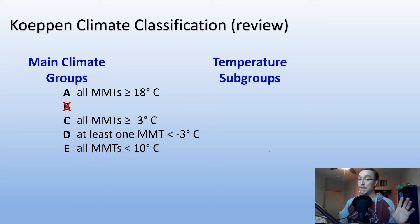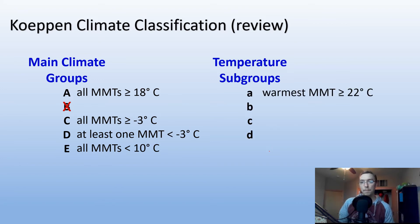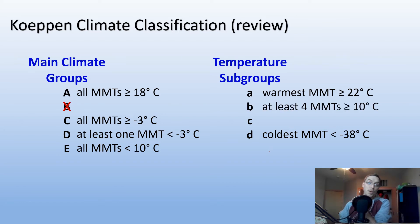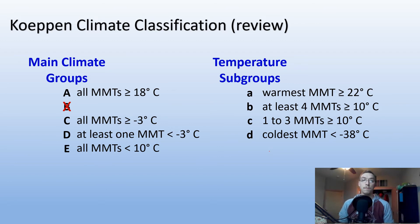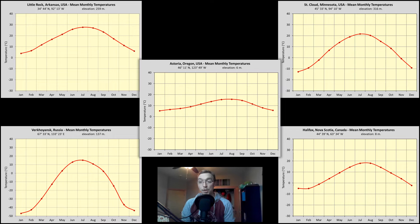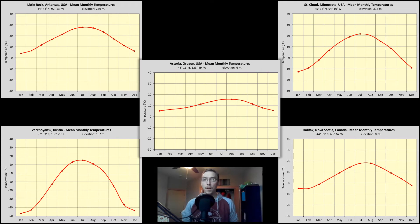For temperature subgroups — lowercase a, b, c, or d — subgroup 'a' means the warmest mean monthly temperature is greater than or equal to 22°C. Subgroup 'd' means the coldest mean monthly temperature is less than −38°C. Subgroup 'b' means at least four mean monthly temperatures are greater than or equal to 10°C. Subgroup 'c' means one to three mean monthly temperatures are greater than or equal to 10°C. For these five cities, pause the video and work out the main group (A, C, D, or E) and the temperature subgroup (a, b, c, or d). Answers are listed in the description below.